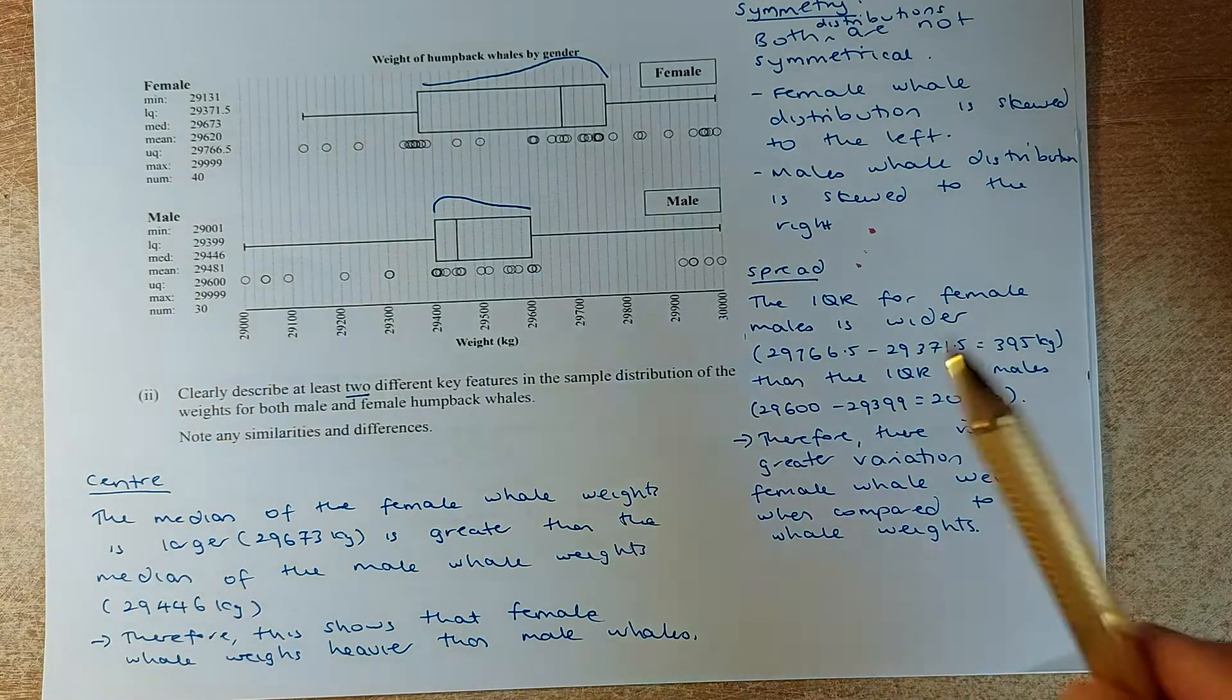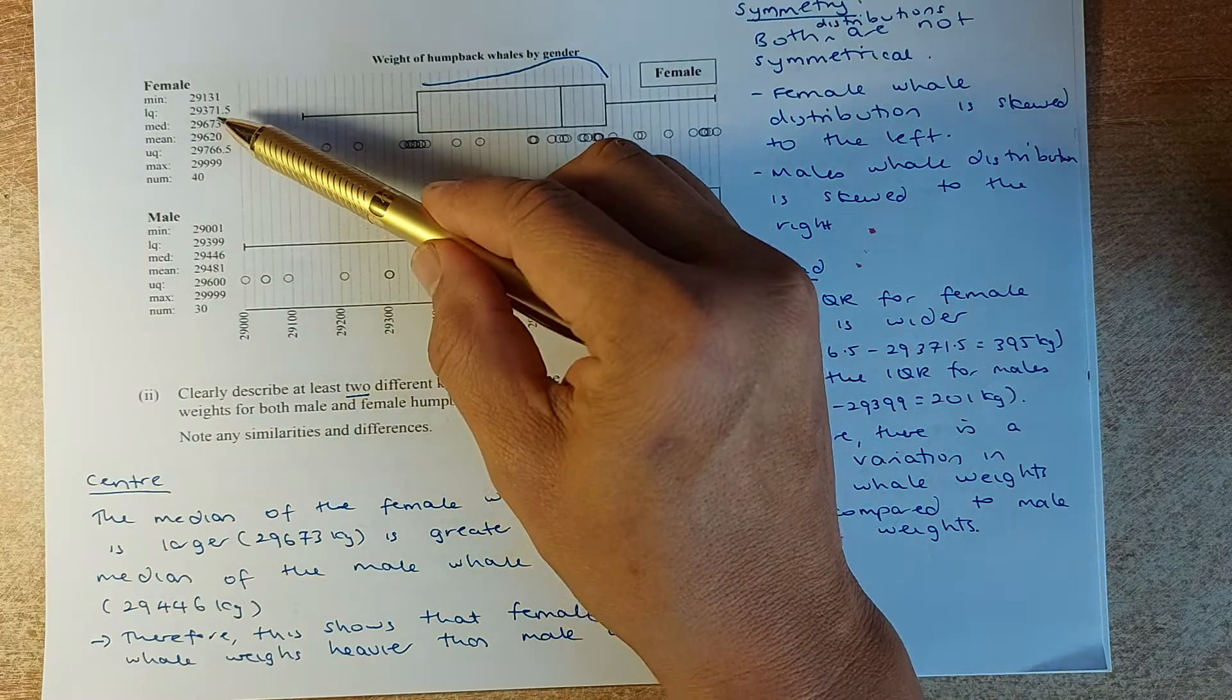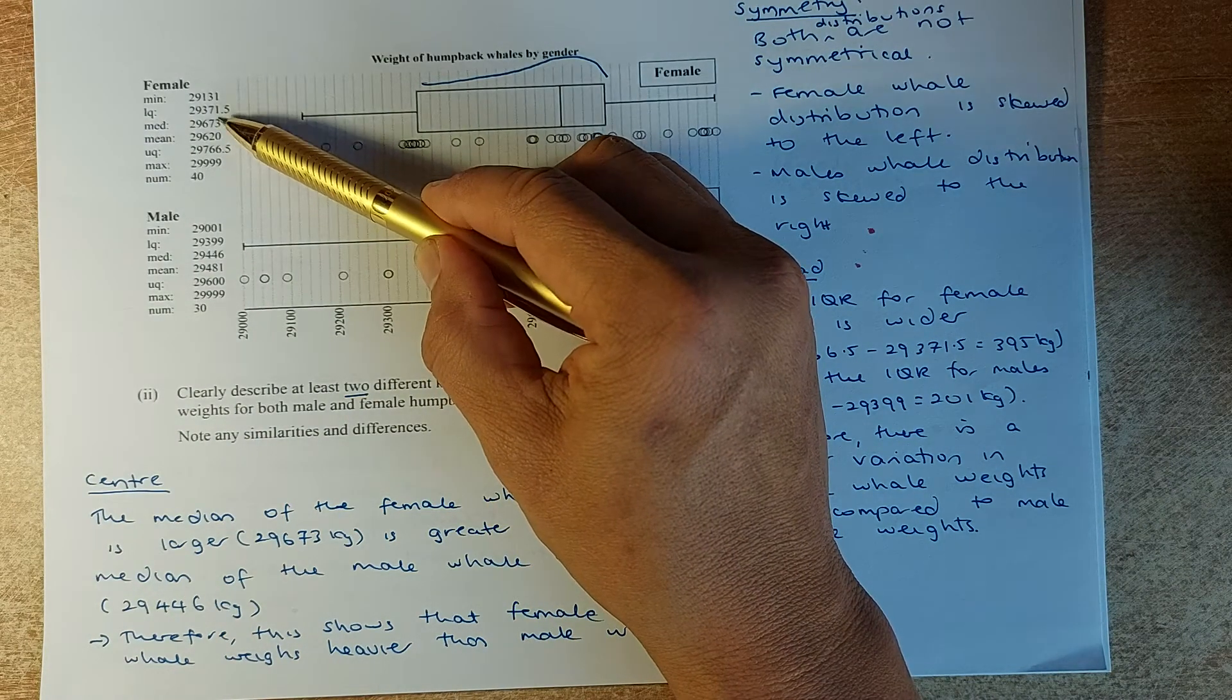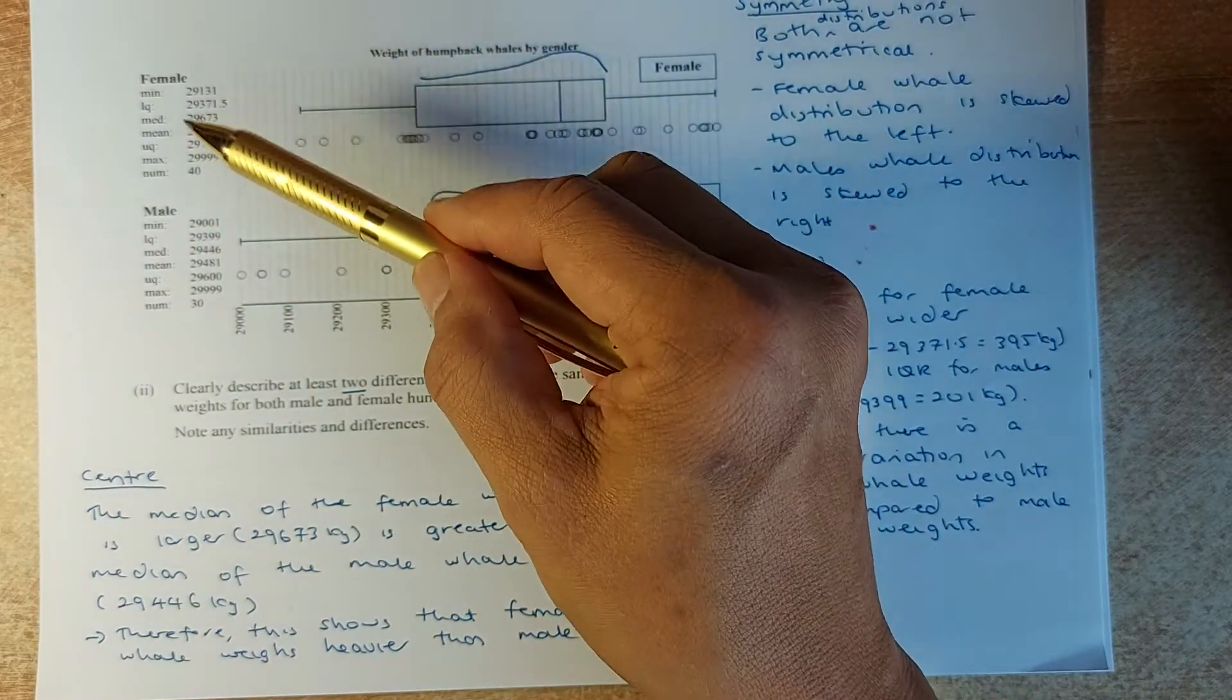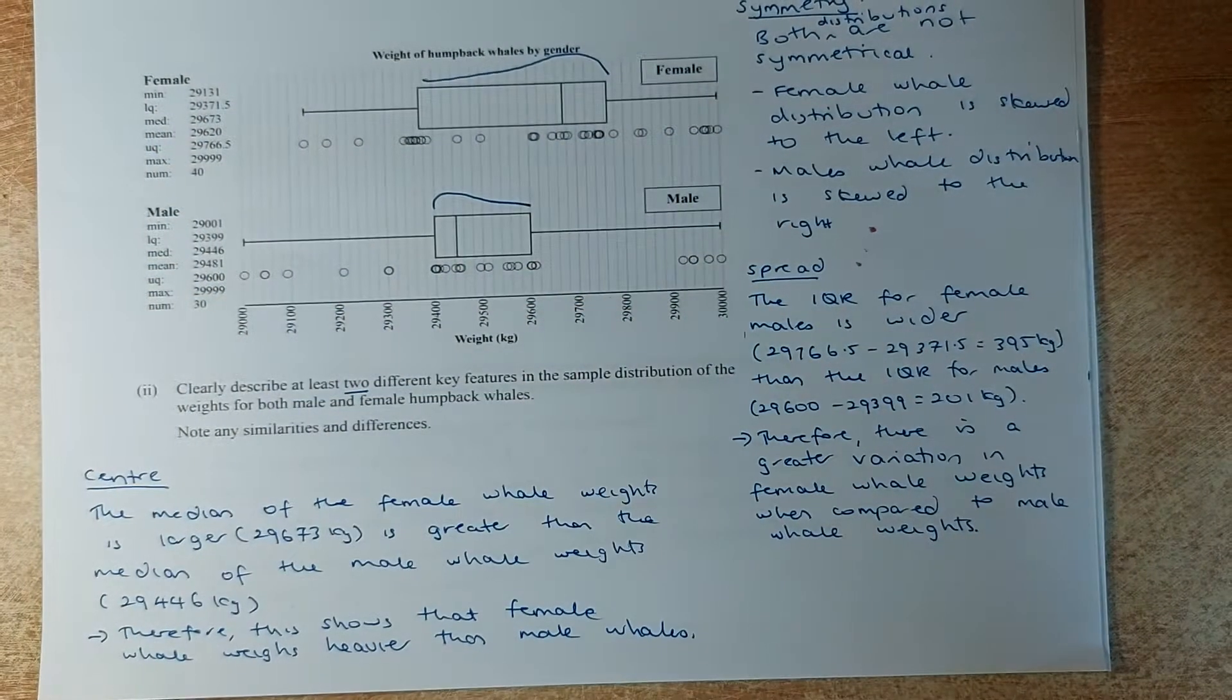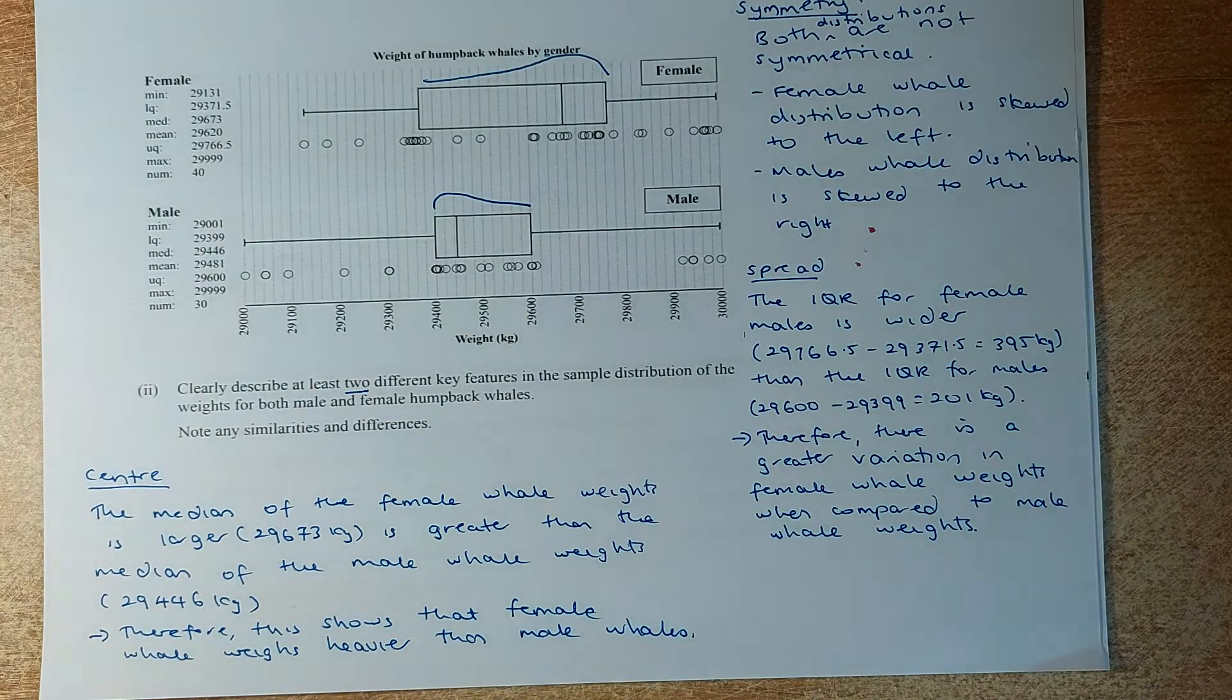Now we shall proceed to the last one, the center. You can either talk about the mean or the median. So we compare the mean median. The median for female is 29,673, and the median for male is 29,446. Technically, the female has a bigger median than the male, and you can conclude that the female is technically heavier than the male.